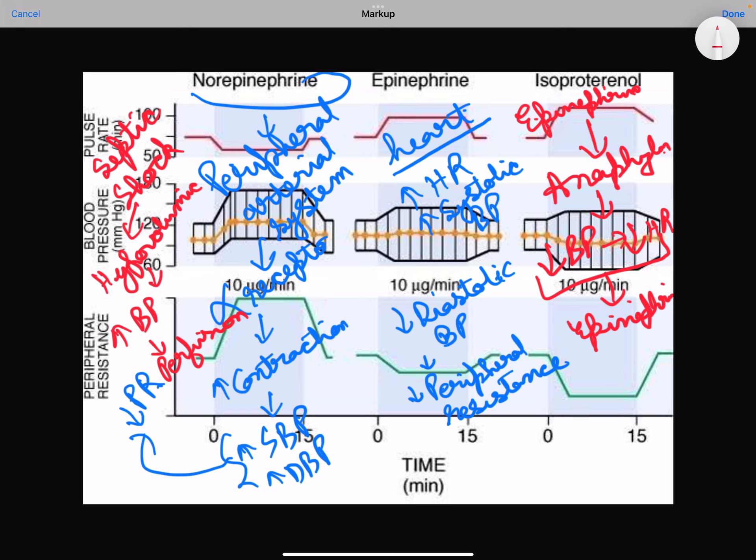One more point is that norepinephrine physiologically is continuously secreted into the blood vessels, whereas epinephrine is released in episodes from adrenal medulla.